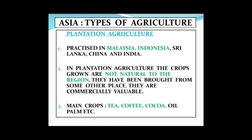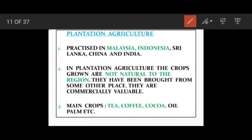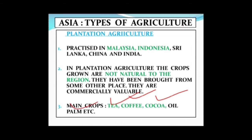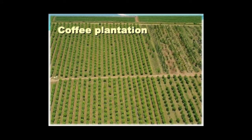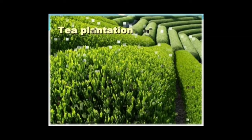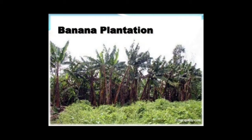The next type of agriculture is plantation agriculture. The crops are grown for profit and they are mostly brought from outside the region. It is practiced mostly in Malaysia, Indonesia, Sri Lanka, China and India. The crops grown are not natural to the region — they have been brought from somewhere else and are commercially valuable. Examples include tea, coffee, cocoa, palm, rubber and coconut. These are plantation crops, and you can see coffee plantation, tea plantation and banana plantation as examples.